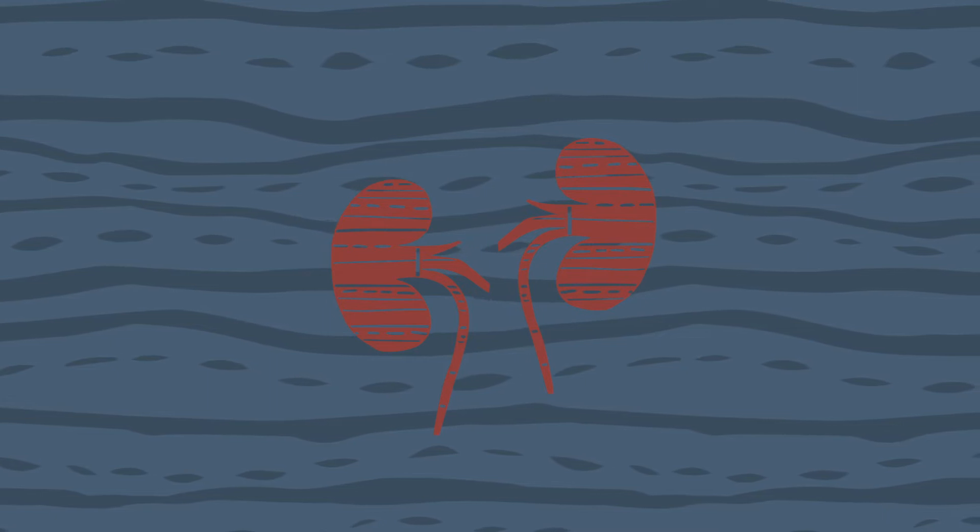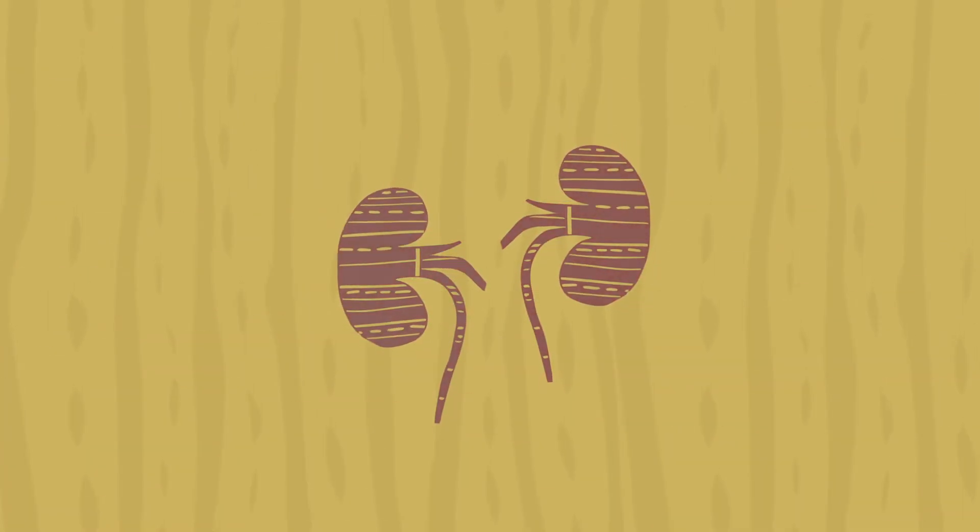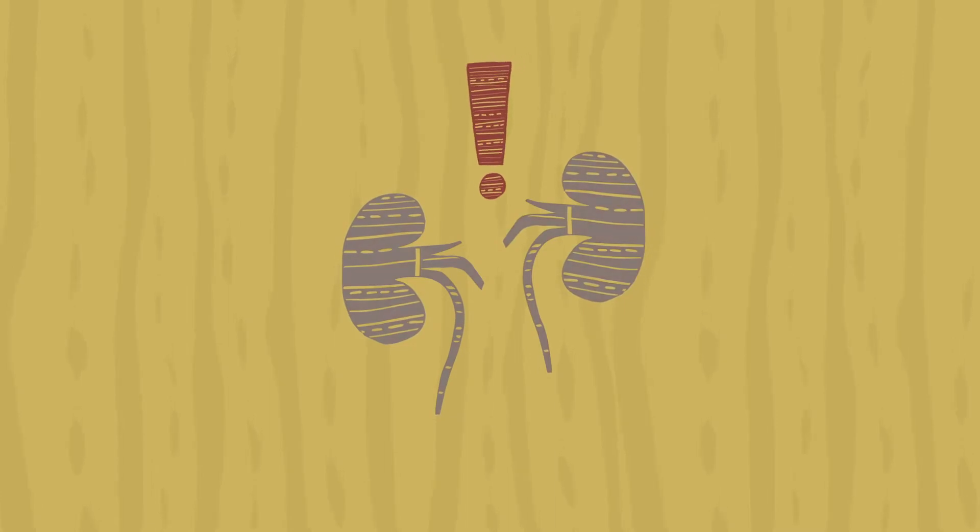Kidney disease is a serious health concern for all Australians. Aboriginal and Torres Strait Islander people experience a greater burden of kidney disease than other Australians.